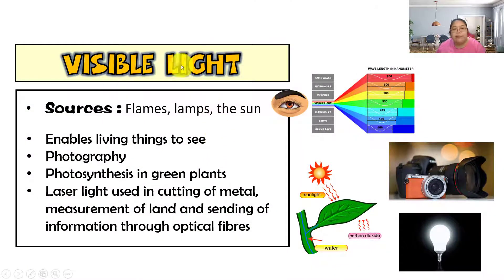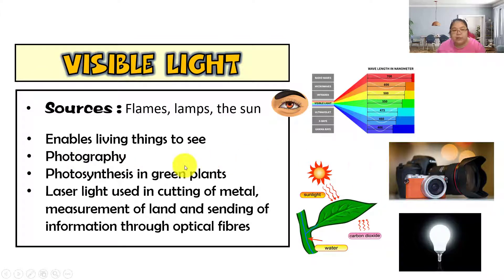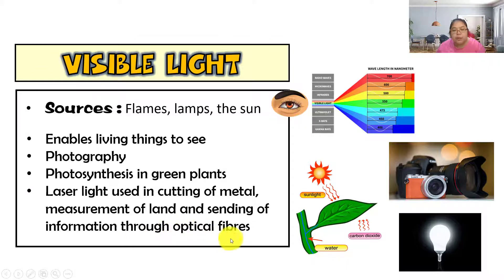Next is visible light — the light that we can see. Sources come from flames, lamps, and the sun. Applications include enabling living things to see, photography, photosynthesis for green plants, and laser light used for cutting metal, measurement of land, and sending information through optical fiber.